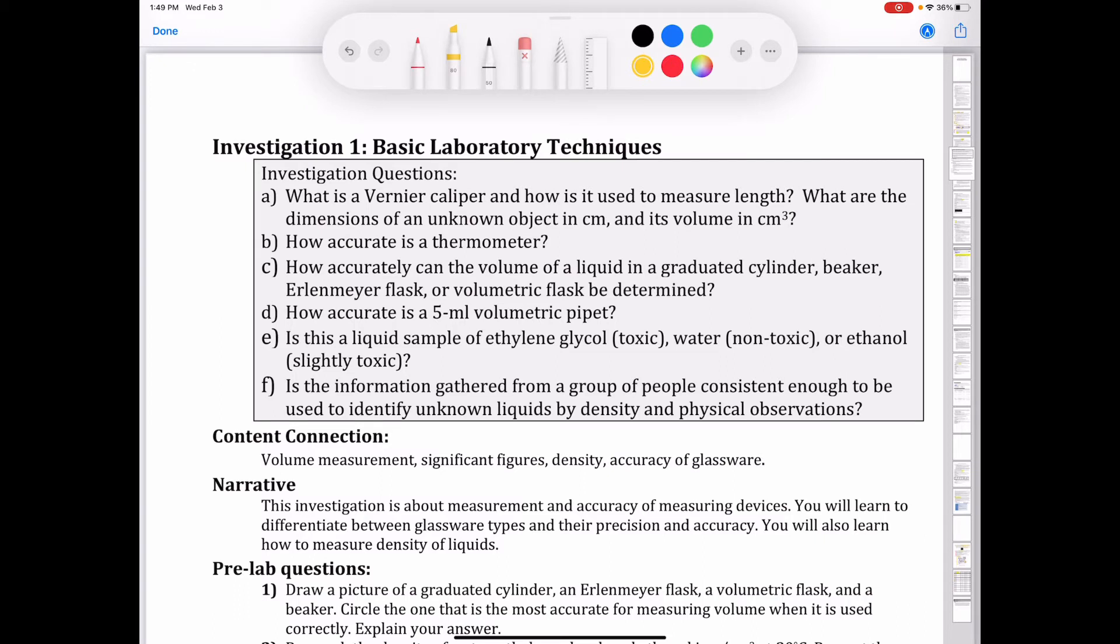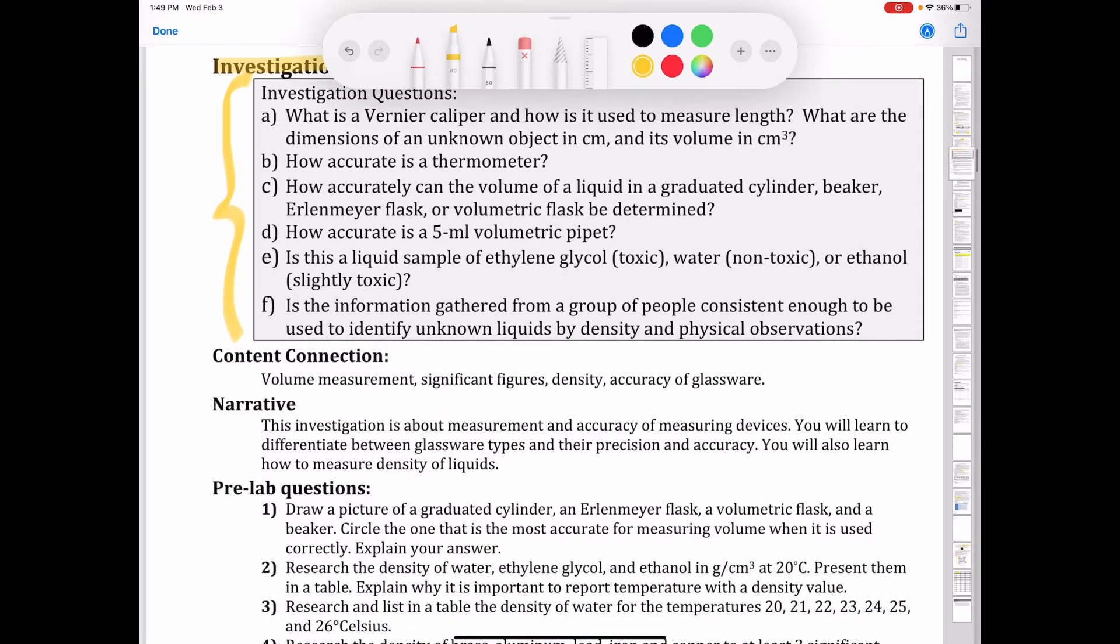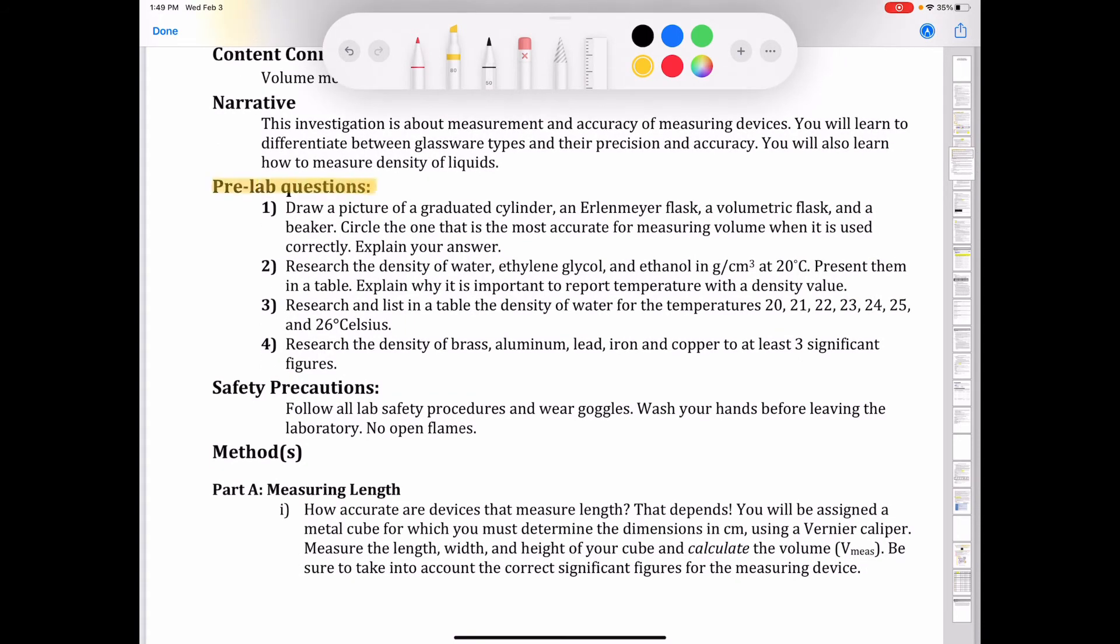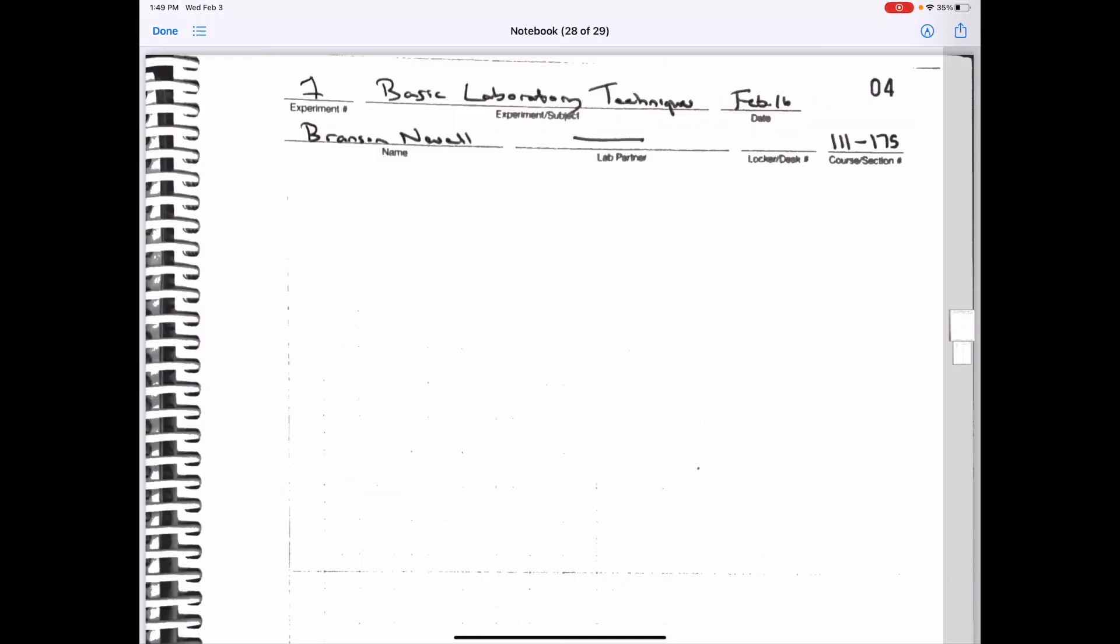Okay, let's turn our attention to our first lab. This is it, basic laboratory techniques. So the questions here are the questions that we're trying to answer in the five different parts. There's part A, B, C, D, and E to this experiment. And first thing is the pre-lab questions. So these four questions, again, are going to be answered by you before you come into the lab. You're going to have them prepared.